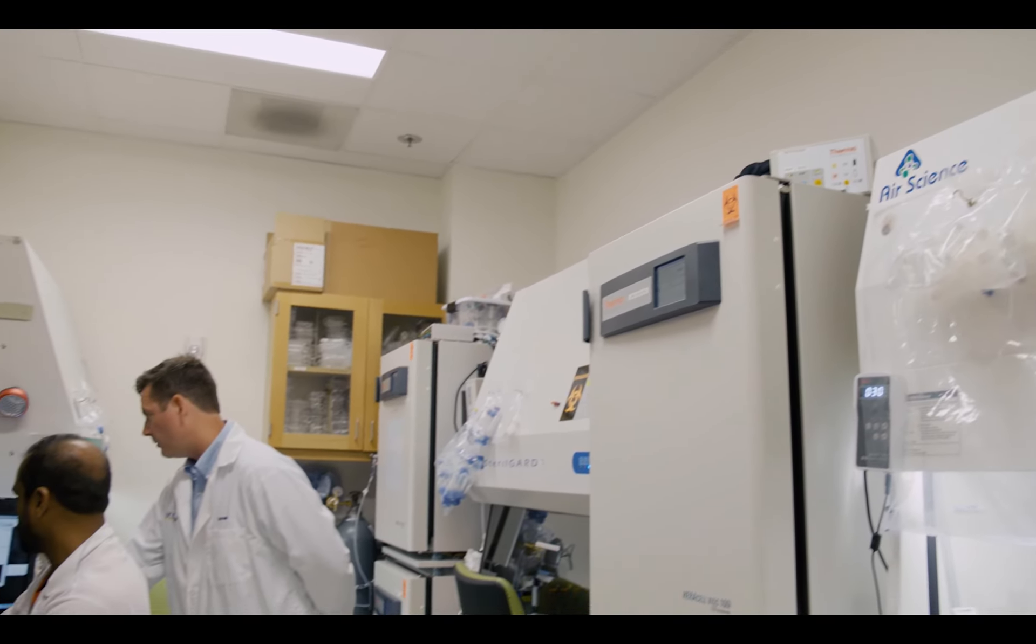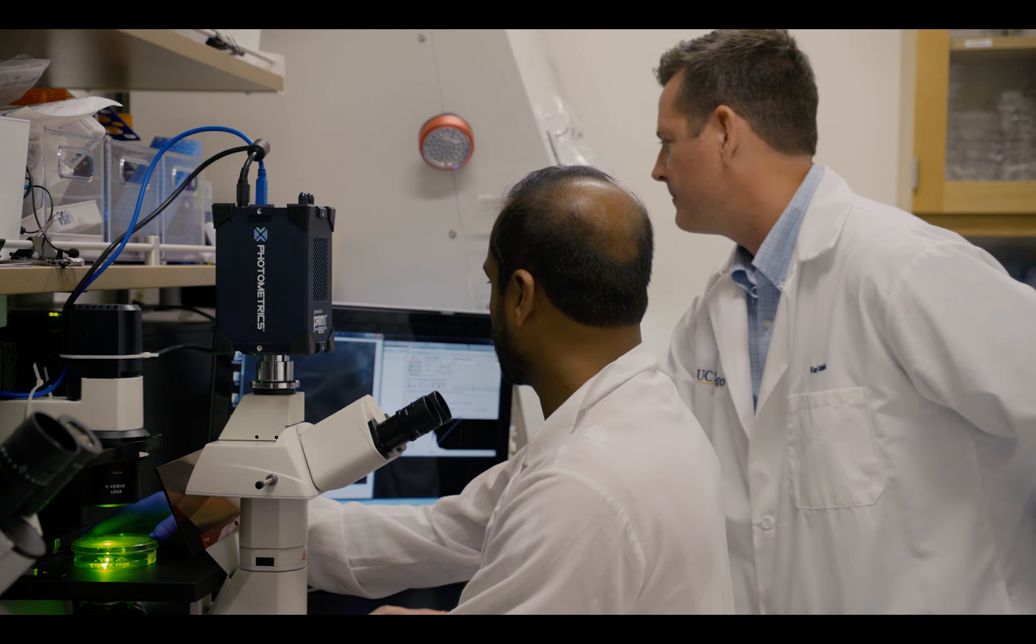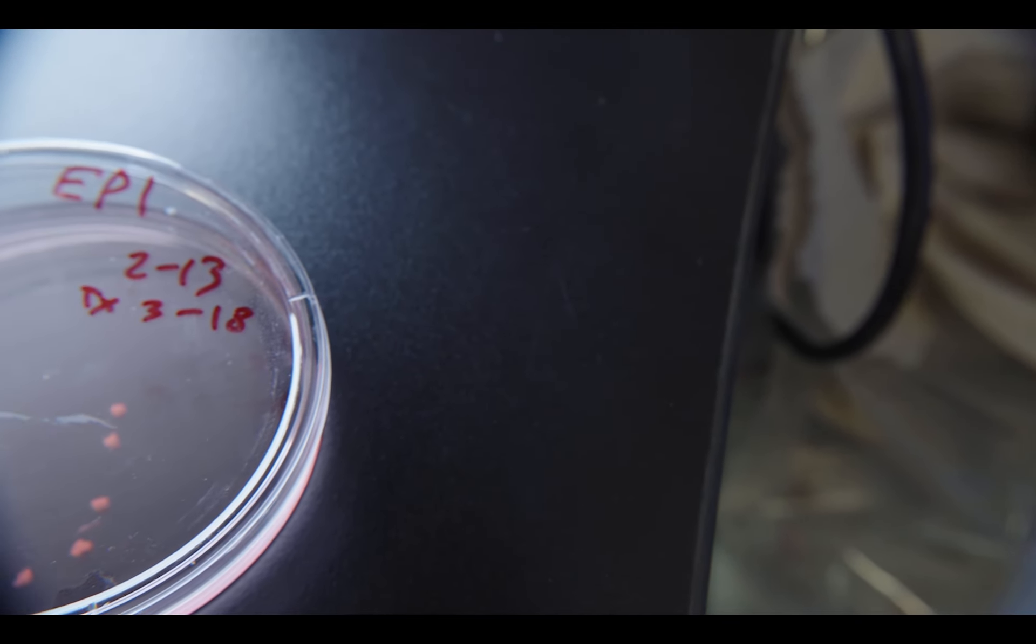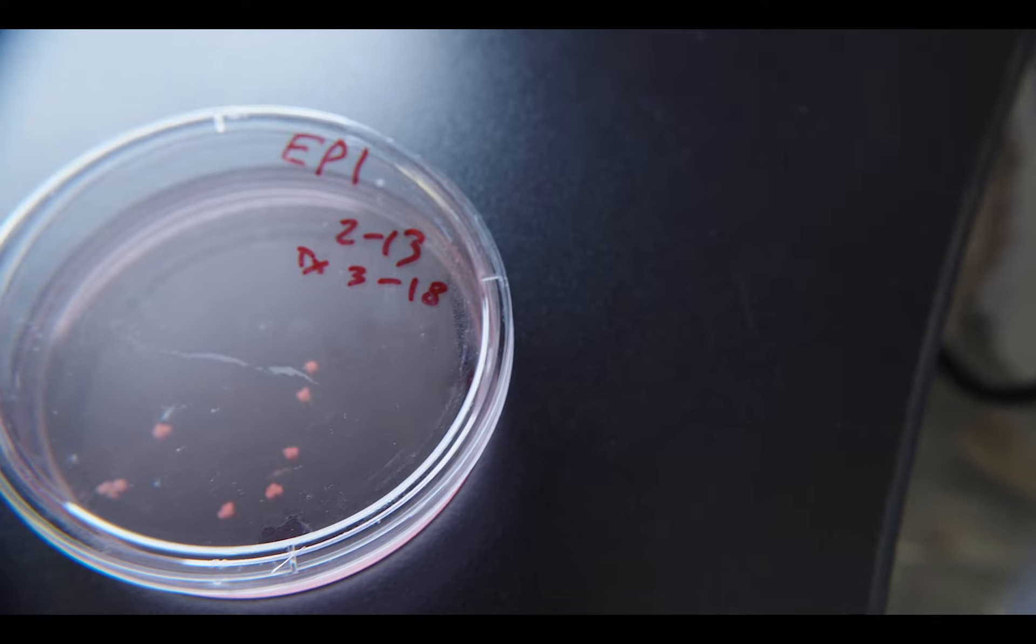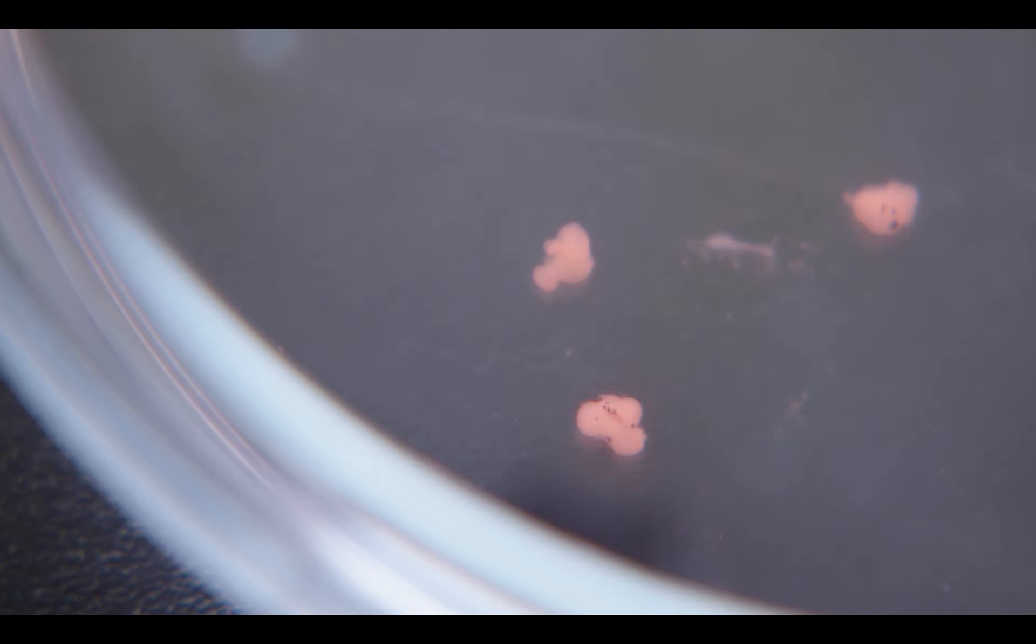Carl Wallen is the director of the Richard C. Atkinson Laboratory for Regenerative Ophthalmology at UC San Diego. His lab uses stem cells to create tiny human retinas in order to study eye disease, and hopefully one day, cure blindness.